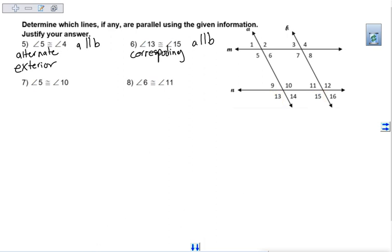Next up we're looking at angle 5 and angle 10. Cover up line B, that's extra information. These are both interior angles on different sides of the transversal, so these are alternate interior angles. They're both on line A, that's our transversal. That means line M and N are the ones that are parallel.